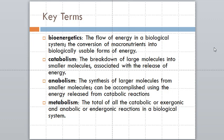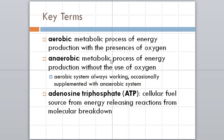Catabolism is looking at the breakdown of larger molecules into smaller molecules. This includes food that's ingested and also tissues of the body. Anabolism or anabolic processes are just the opposite — the synthesis of larger molecules — and metabolism is the net sum between those two. Aerobic metabolic pathways are in the presence of oxygen; anaerobic are without.